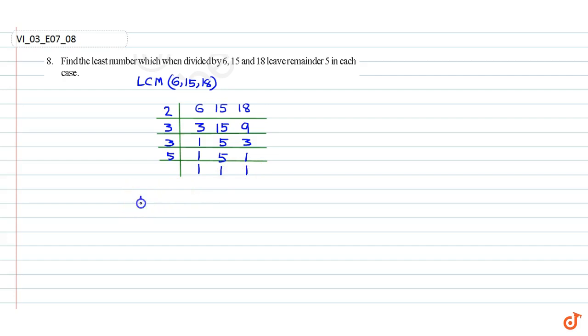Therefore, the LCM is 2 into 3 into 3 into 5. Which is equal to 9 into 10. Which is equal to 90.